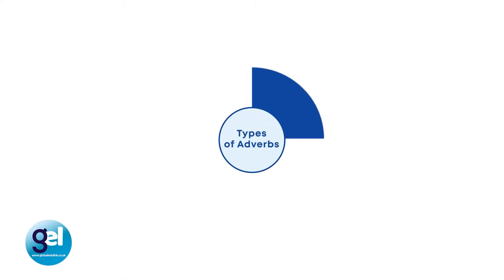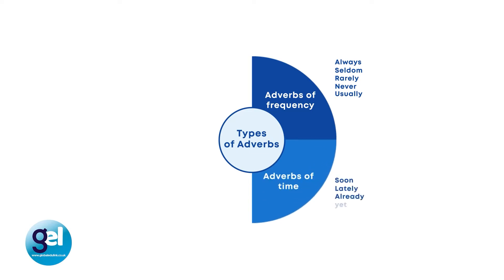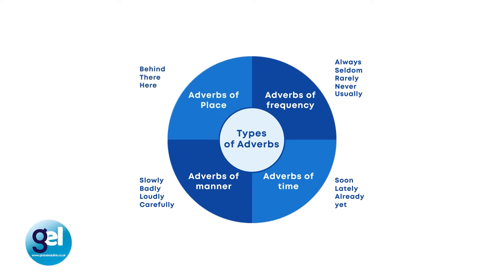Types of adverbs: we can use a range of adverbs to describe time, place and manner. Adverbs of frequency include always, seldom, rarely, never, usually, generally and often. Adverbs of time include soon, lately, already and yet. Adverbs of manner include slowly, badly, loudly and carefully. Adverbs of place include behind, there and here. Adverbs of frequency are really useful to teach alongside daily routines with lower level students and this can be done at quite a low level.